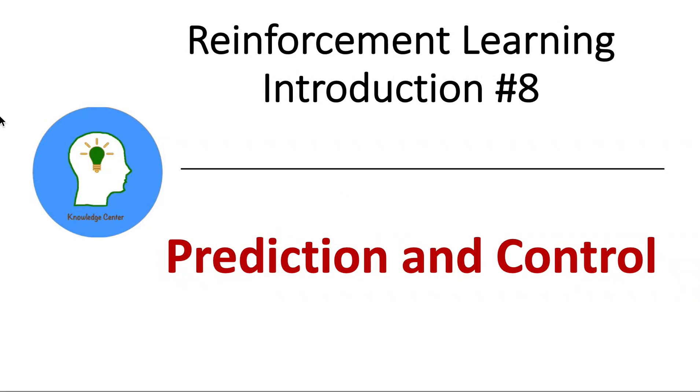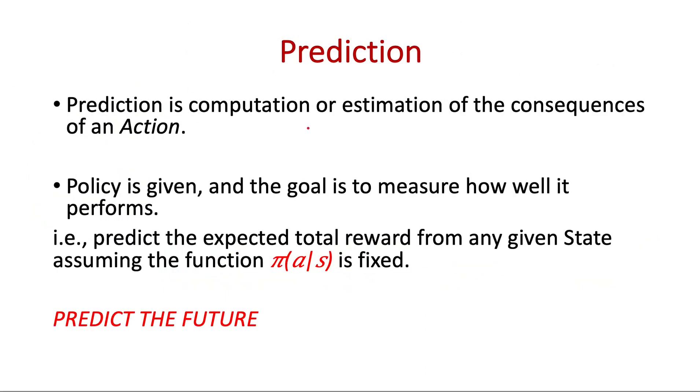Prediction and control is another common problem in reinforcement learning. Prediction is the computation or estimation of the consequences of an action.